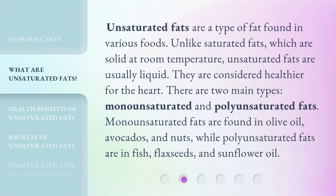Unsaturated fats are a type of fat found in various foods. Unlike saturated fats, which are solid at room temperature, unsaturated fats are usually liquid. They are considered healthier for the heart. There are two main types: monounsaturated and polyunsaturated fats. Monounsaturated fats are found in olive oil, avocados, and nuts, while polyunsaturated fats are in fish, flax seeds, and sunflower oil.